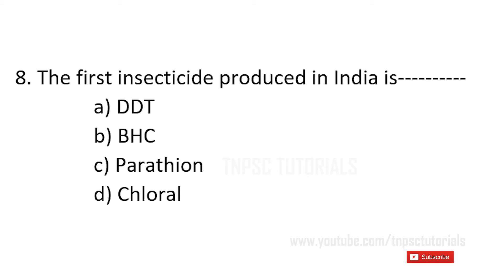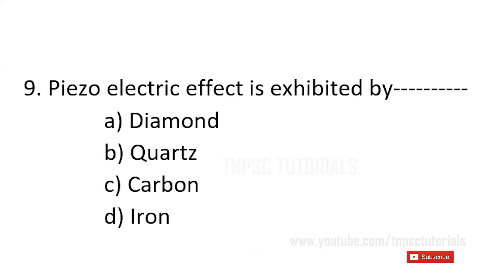Eighth one: the first insecticide produced in India is a) DDT, b) BHC, c) parathion, d) chloral. And the answer is b) BHC. Ninth one: piezoelectric effect is exhibited by a) diamond, b) quartz, c) carbon, d) iron. And the answer is b) quartz.